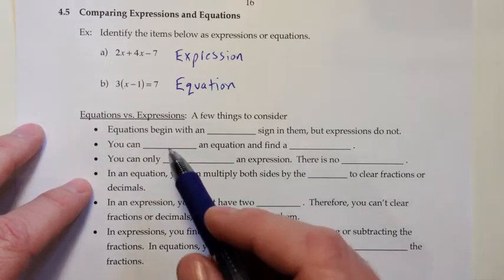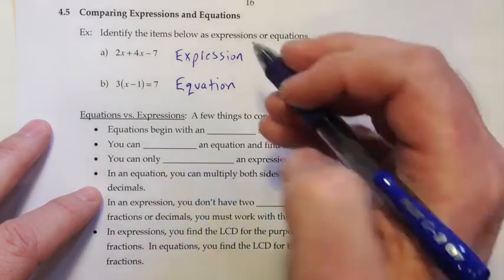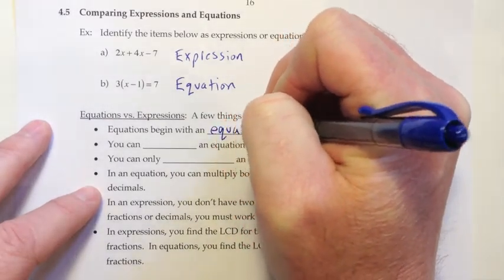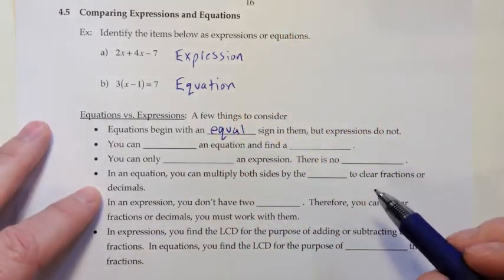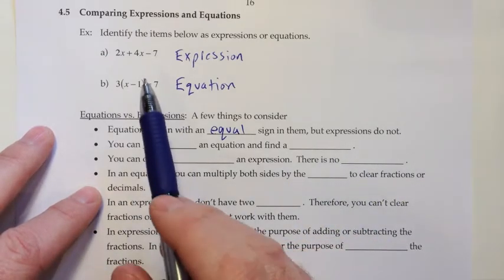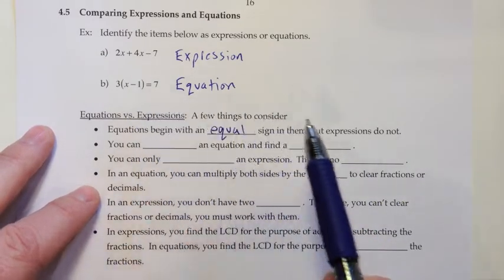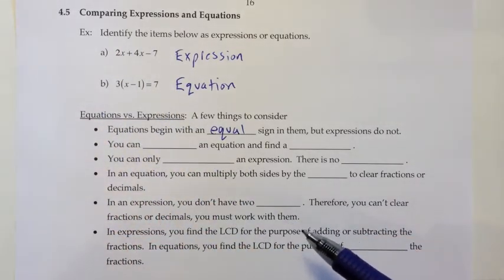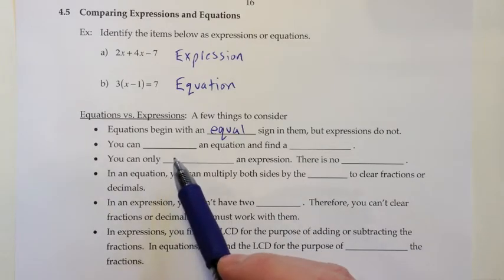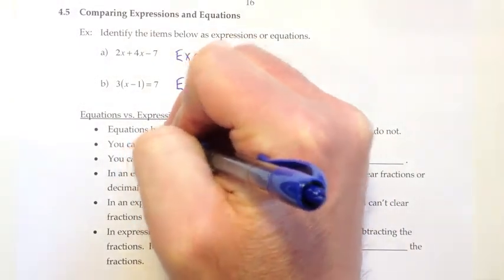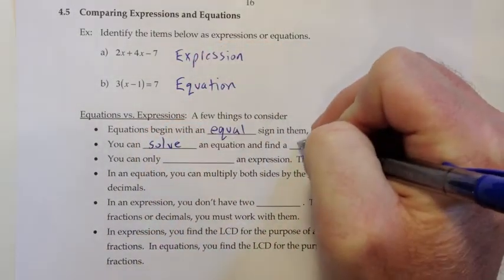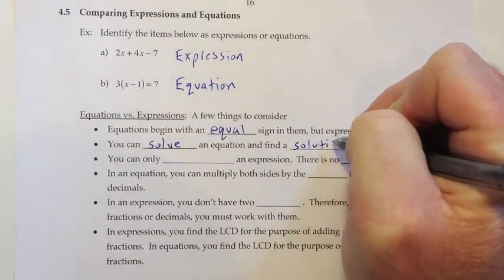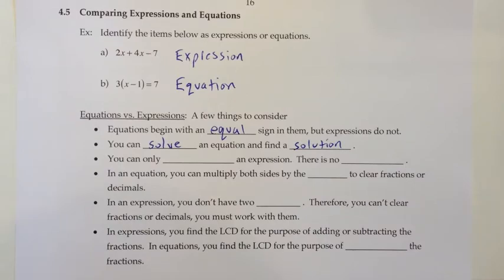Equations have an equal sign in them, but expressions do not. I say 'begin' because usually as you simplify an expression, equal signs will show up — but when the problem is first presented to you, there's no equal sign. As far as what you do with these: you can solve an equation and find a solution, but you can only simplify an expression — there is no solution to an expression.